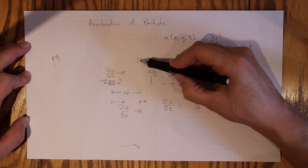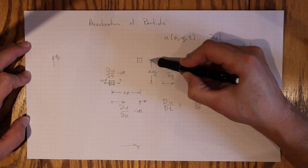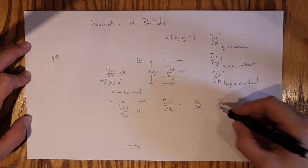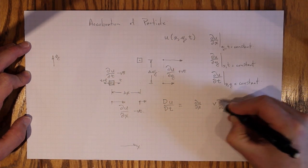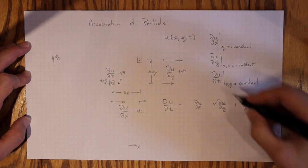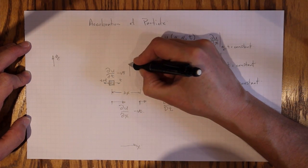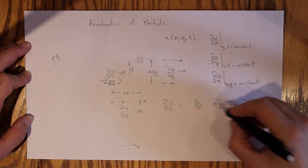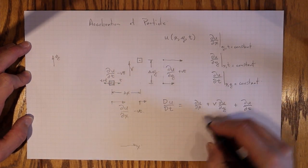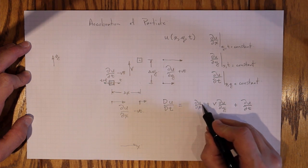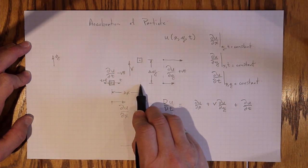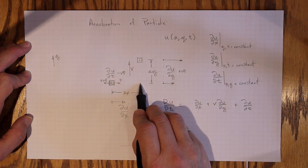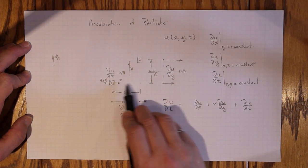It moved from here up to here because v was positive. The bigger v is, the further it moves. So v∂u/∂y. That's the velocity component that's making it go that way. And then the amount of change for ∂u/∂x. That depends on how far it moved in the x direction. The distance it moves in the x direction per unit time. That's the u component of velocity.